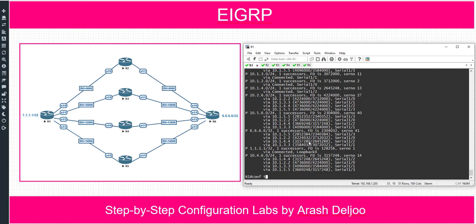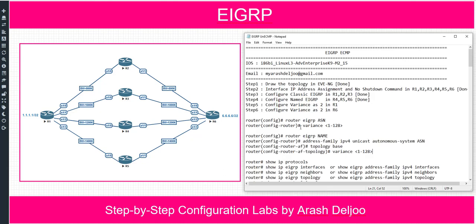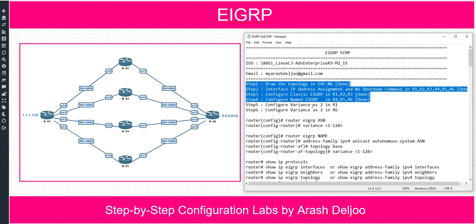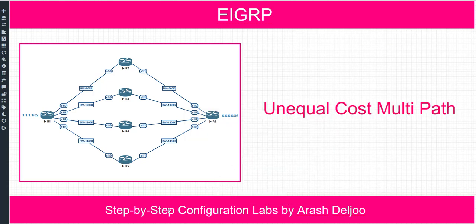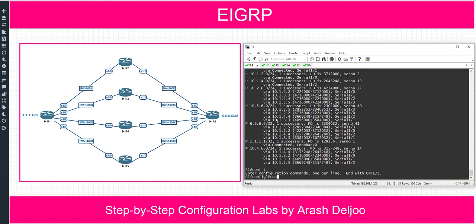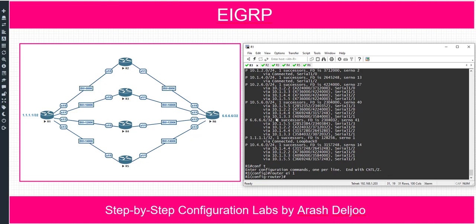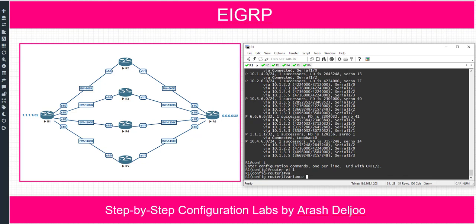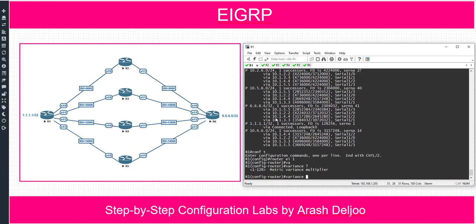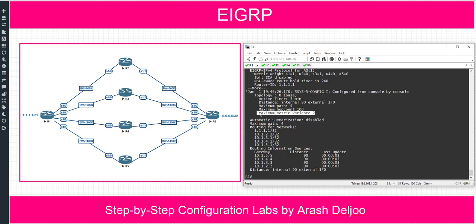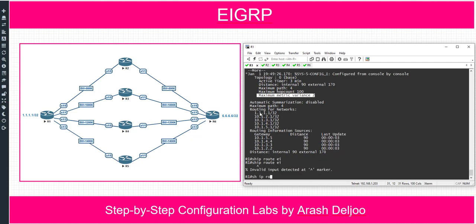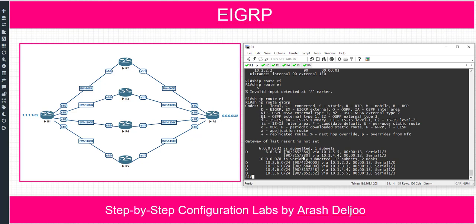Let me show you the configuration steps. Steps 1 through 4 were done previously, and now I want to configure variance as 2 on R1. Under 'router EIGRP 1', use the variance command — you can enter a value between 1 and 128. I'll set variance to 2. 'Show ip protocols' confirms variance is 2, and 'show ip route EIGRP' now shows two paths with different metrics to reach quad6/32.